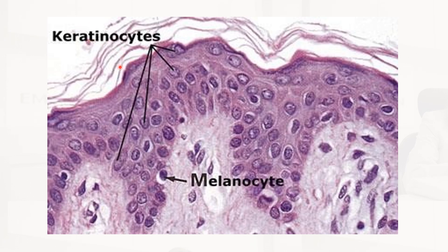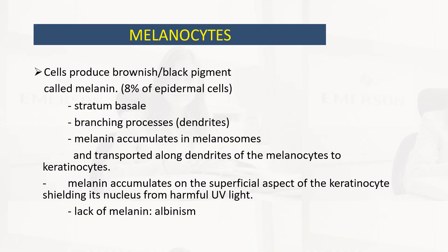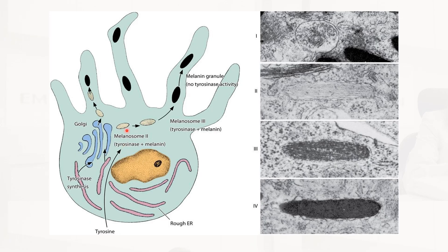Melanocytes produce a brownish-black pigment called melanin and make up about 8 percent of epidermal cells in the stratum basale. They have branching processes called dendrites, and melanin accumulates in melanosomes, which are transported along dendrites to keratinocytes. Melanin accumulates on the superficial aspect of keratinocytes, shielding the nucleus from harmful UV light. Lack of melanin leads to conditions such as albinism.